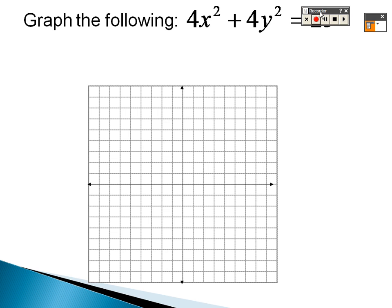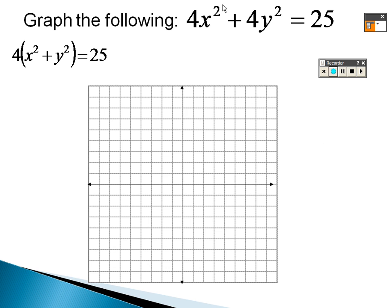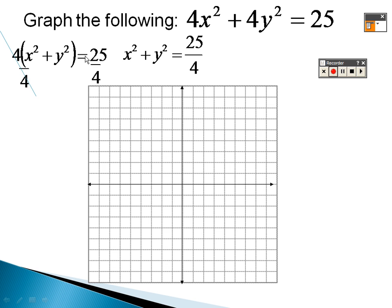Now we're graphing a circle. First, take the 4 out — we can't have numbers in front of x² and y² in a circle equation. Divide both sides by 4 to get the standard form: just x² and y² on the left.